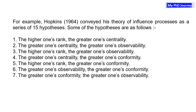For example, Hopkins (1964) conveyed his theory of influence processes as a series of 15 hypotheses. Some of the hypotheses are as follows: 1. The higher one's rank, the greater one's centrality. 2. The greater one's centrality, the greater one's observability. 3. The higher one's rank, the greater one's observability. 4. The greater one's centrality, the greater one's conformity.